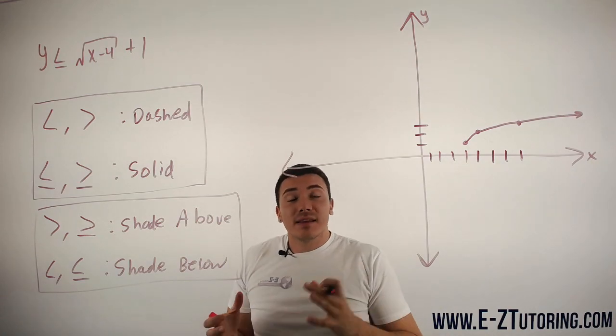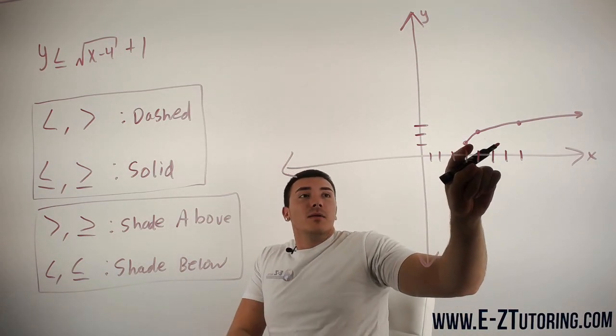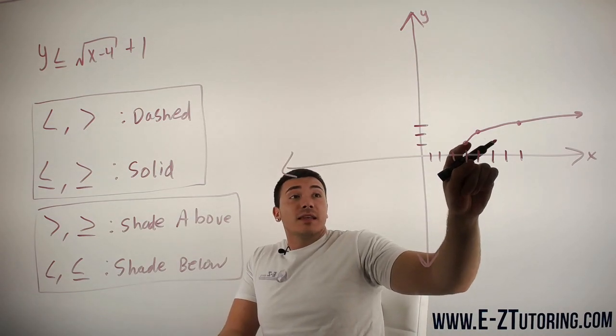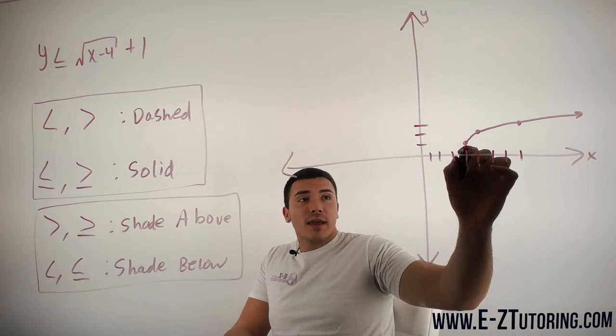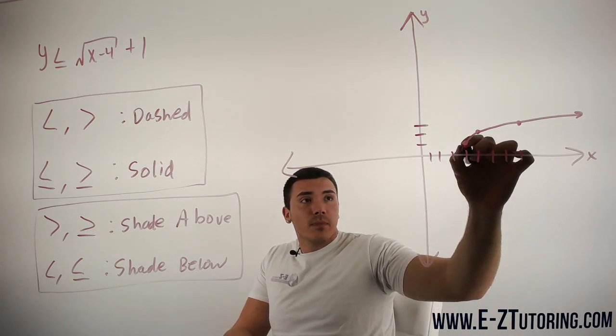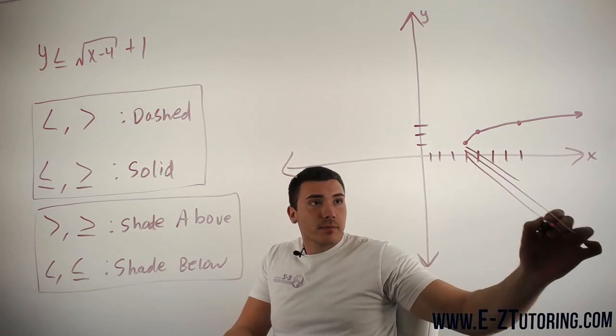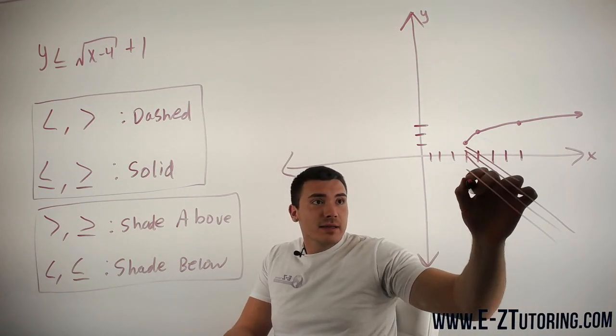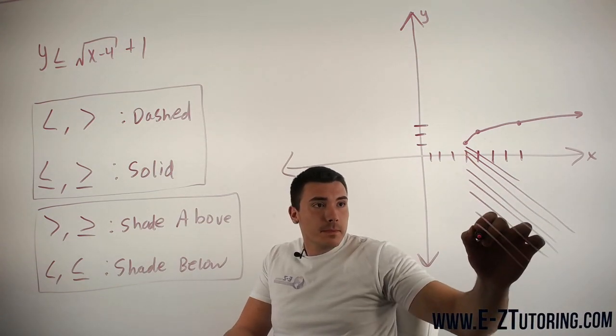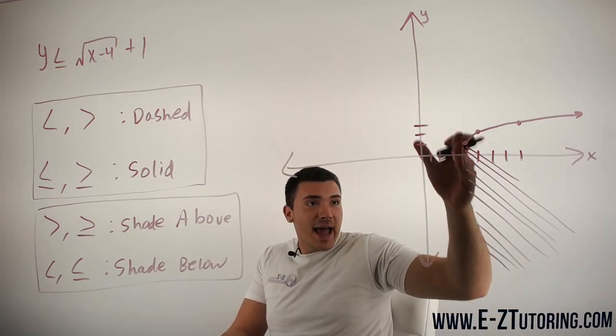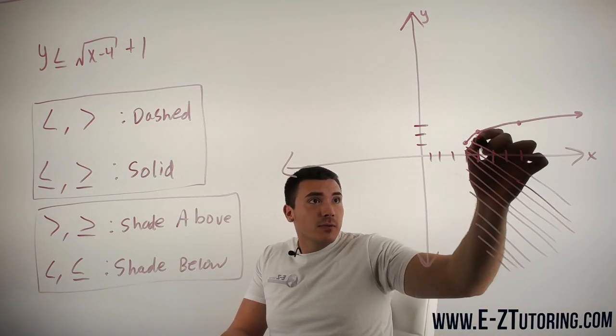Now I know this can seem a little bit confusing because the line starts over here. Well, we know that this is the smallest value of X. We can't have anything less than it. You're going to shade everything up to this point. We shade like this, never passing that point. It's like an asymptote here if you want to think about it like that. And then we connect all the way up to the line.